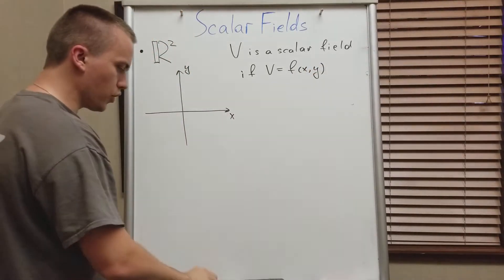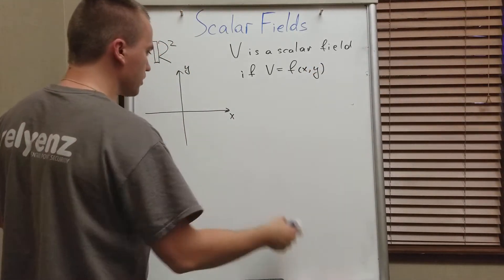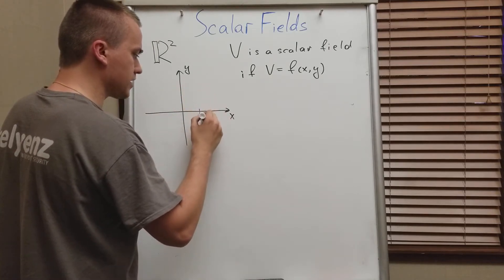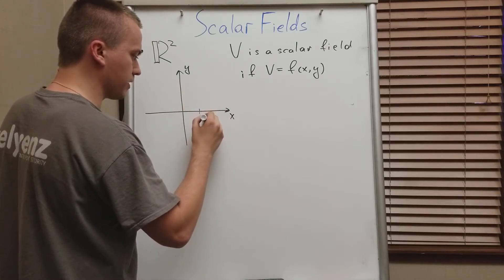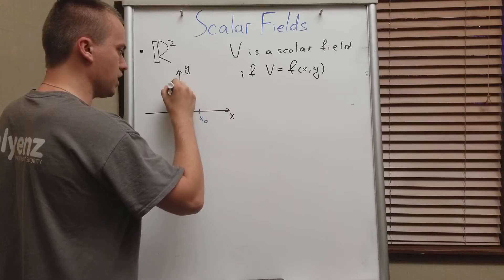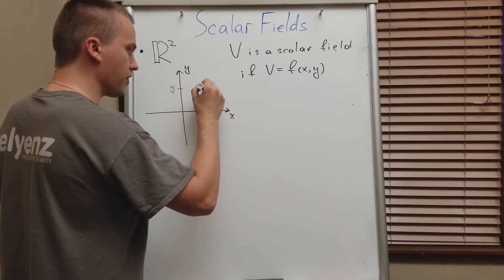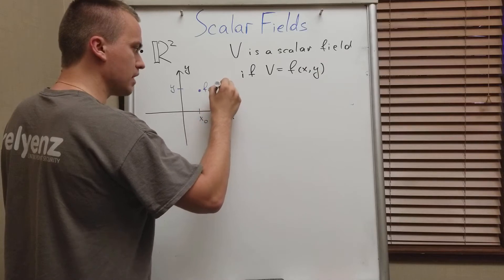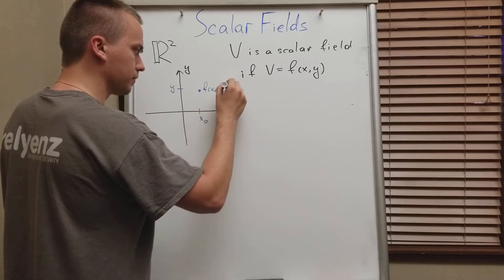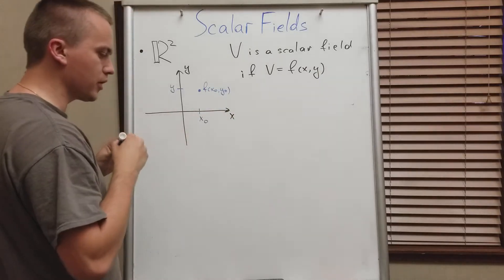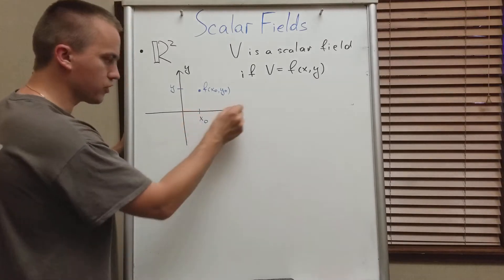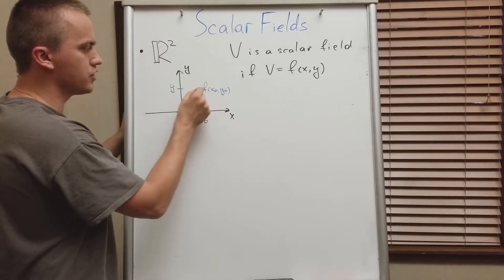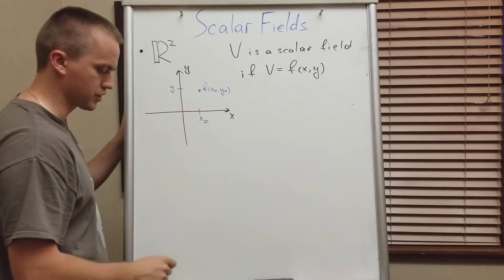Basically what we're doing is for each point on our graph, if we're going to take some value — for example, x naught — and we're going to take a value of y naught, at this point we're going to find the value of the scalar field: f of x naught and y naught. And for different points — moving our point to the left, to the right — we're going to get different values for our function.